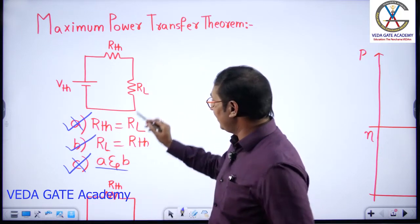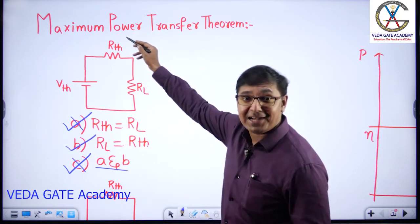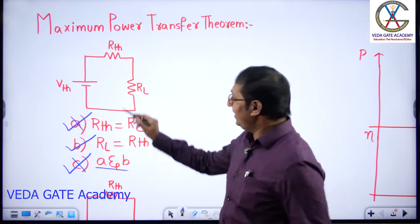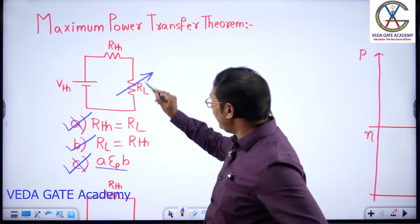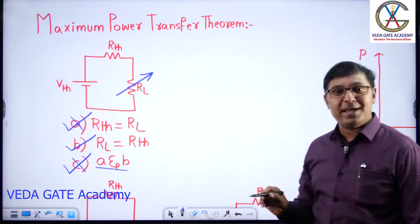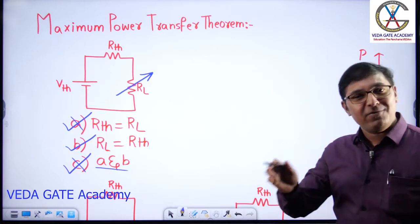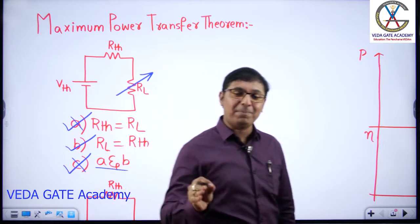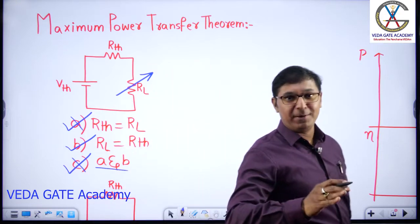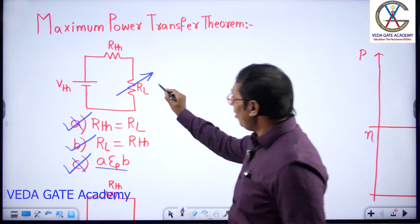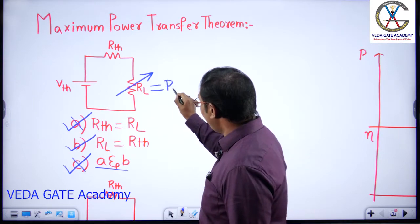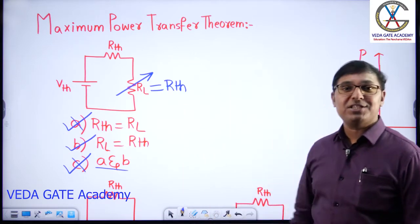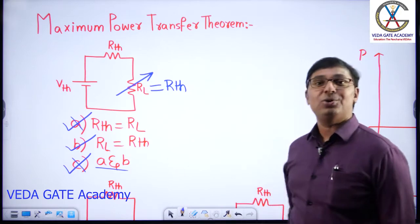Why is option B correct? Here, who is variable — RTH or RL? RL is variable. We always replace the variable with a constant, so we replace RL with RTH. Then maximum power is transferred from source to load.